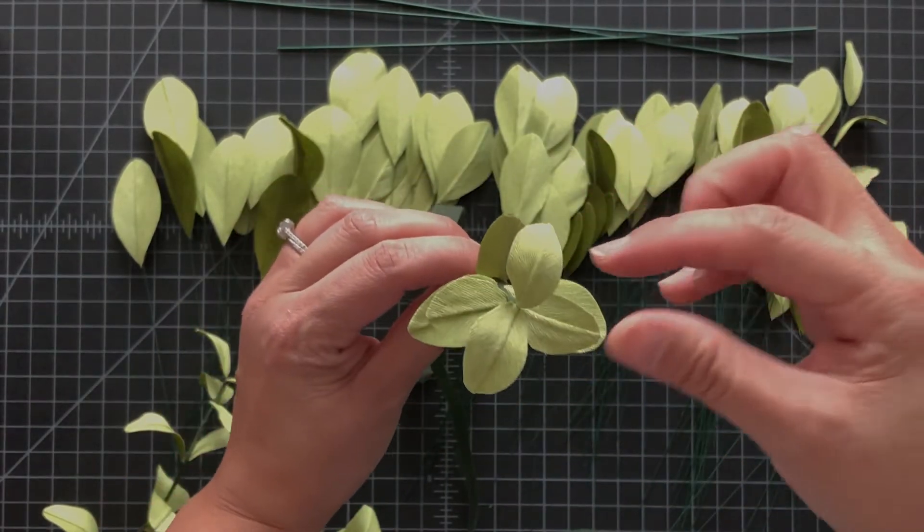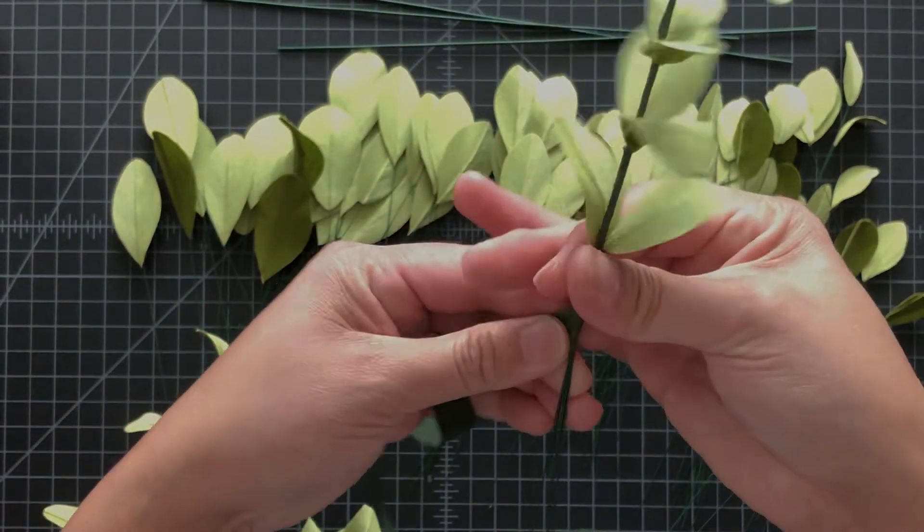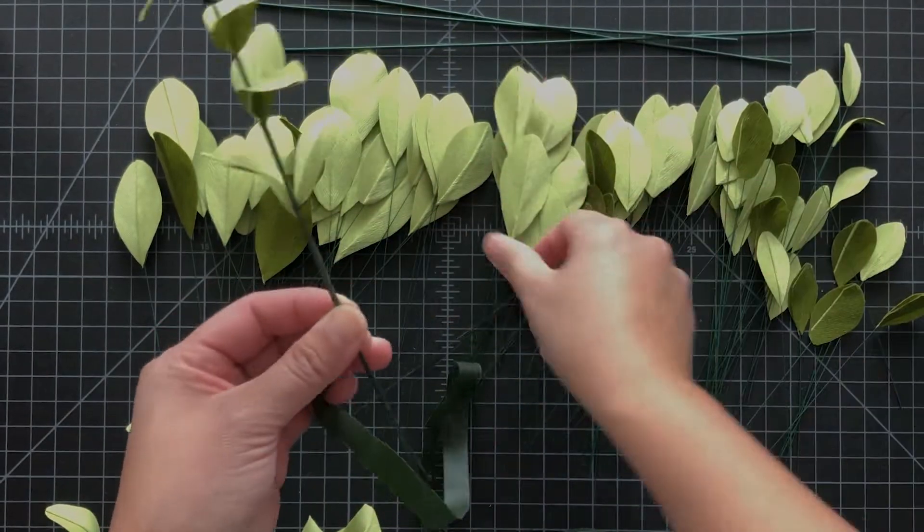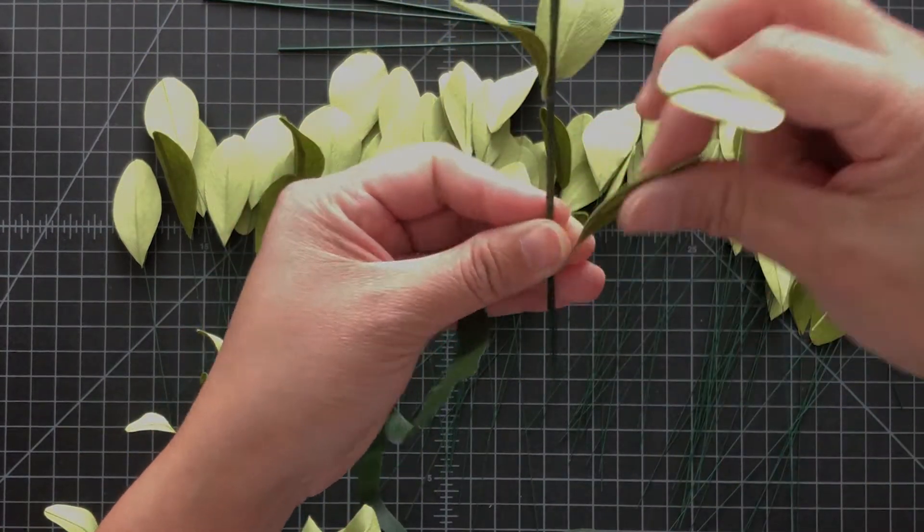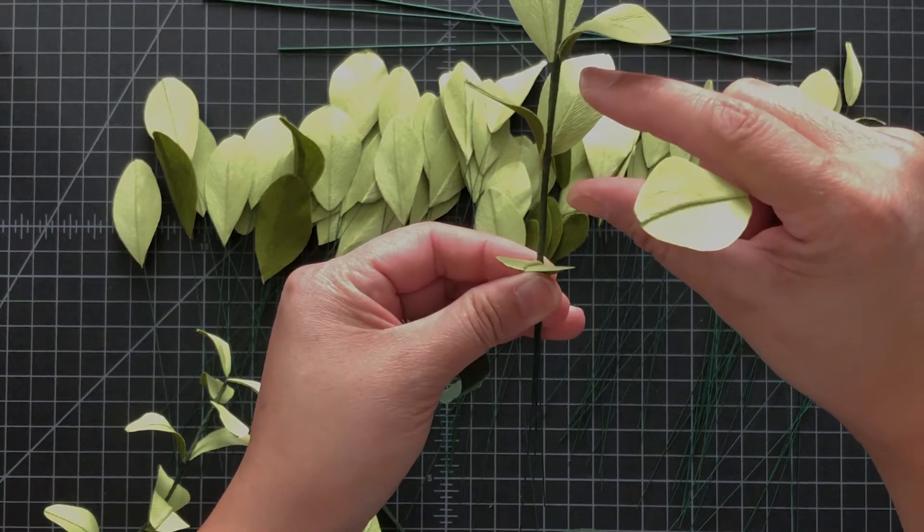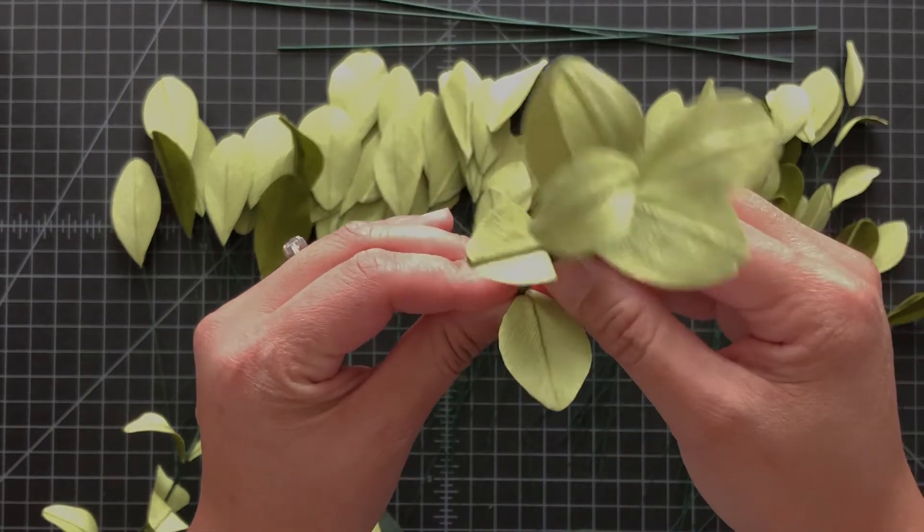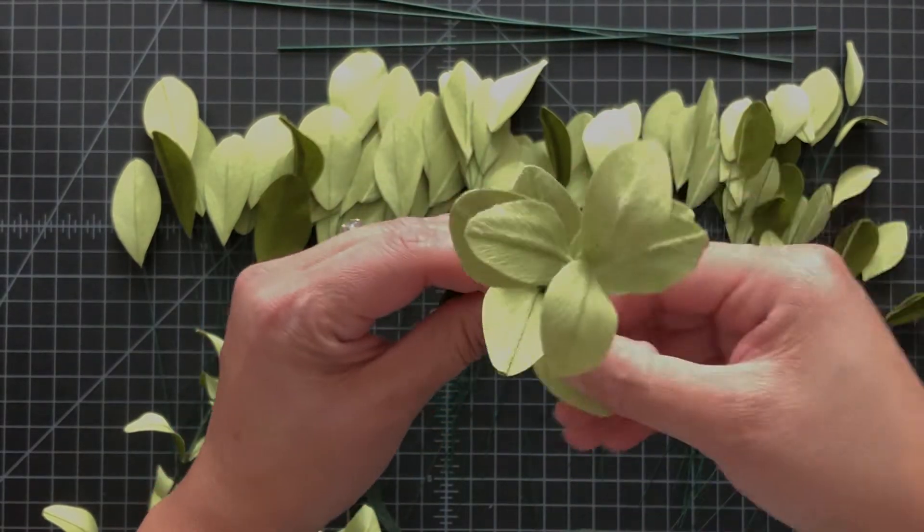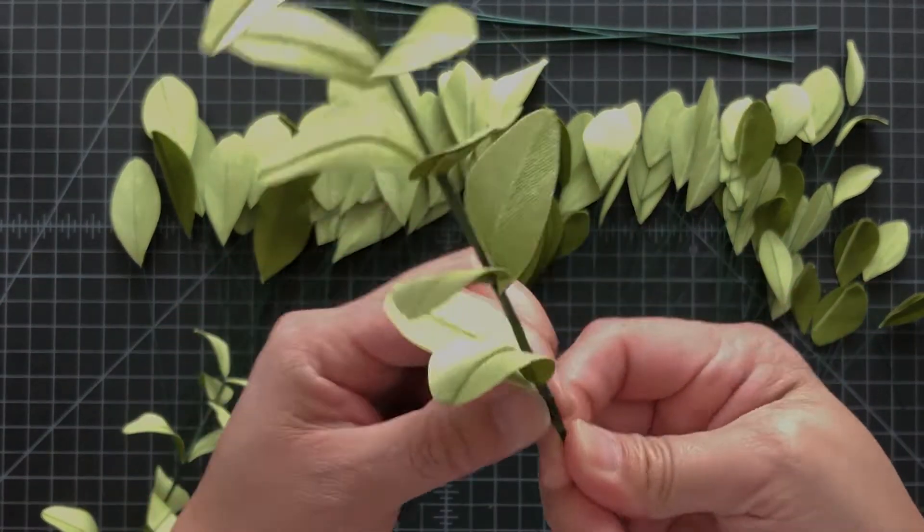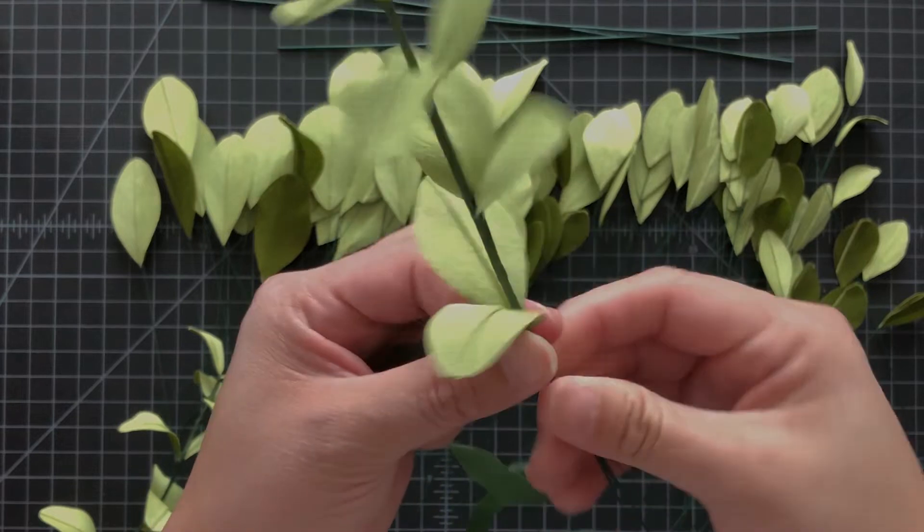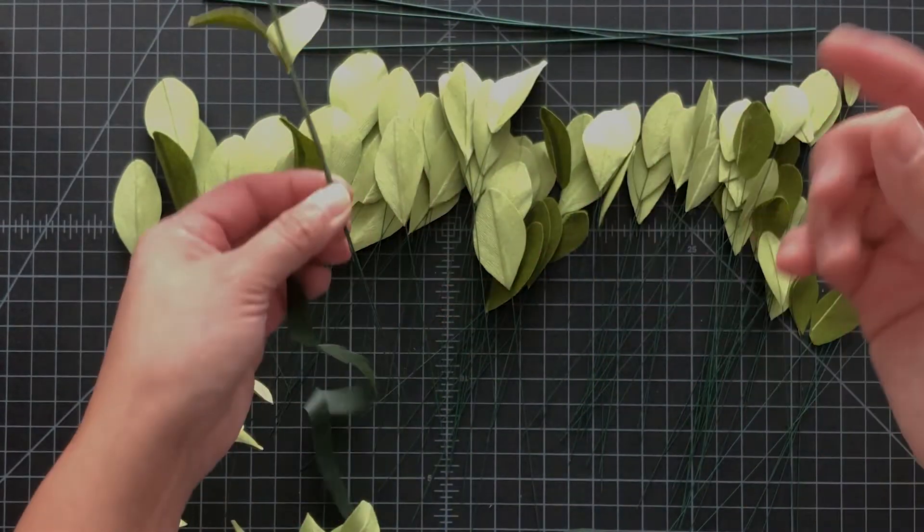We'll put it the opposite direction again and move on. You'll notice I'm getting slightly further apart as I move down to each leaf set. It doesn't have to be perfect because you know how nature is - nature is imperfectly perfect.